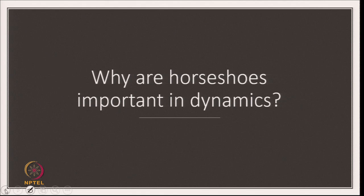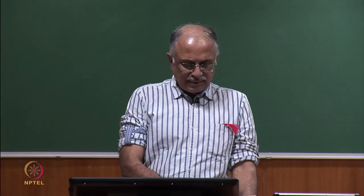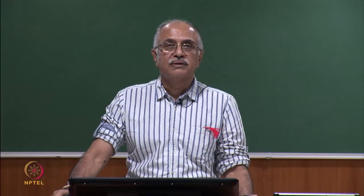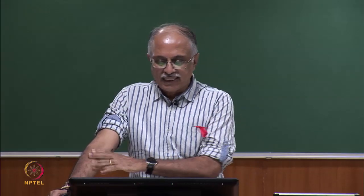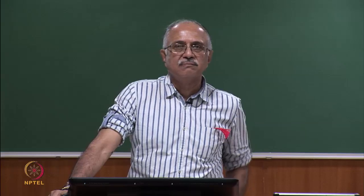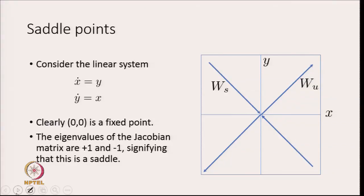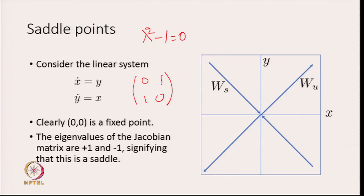Why are horseshoes important in dynamics? The simple answer is that horseshoes occur all over the place. To see that, consider the simple linear system: x-dot equals y and y-dot equals x. Clearly (0,0) is a fixed point; the Jacobian is [[0,1],[1,0]], and the eigenvalues satisfy lambda squared minus 1 equals zero, giving plus 1 and minus 1 — signifying that the origin is a saddle.